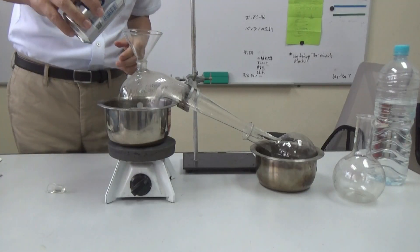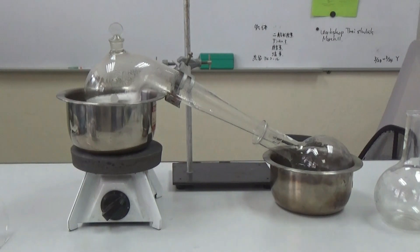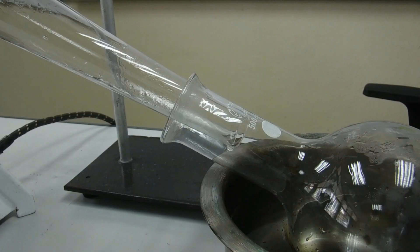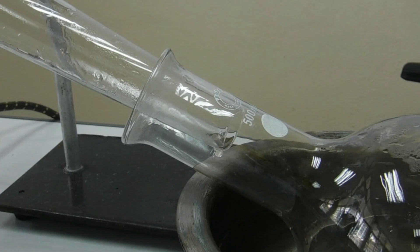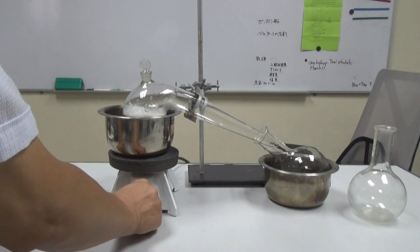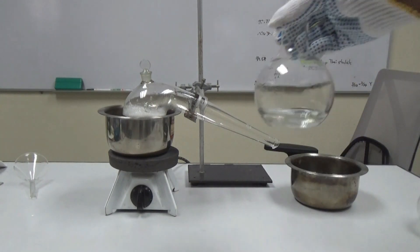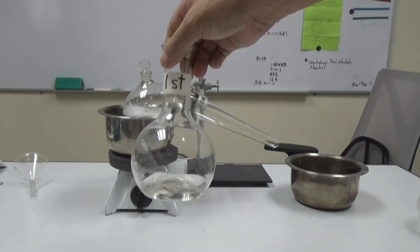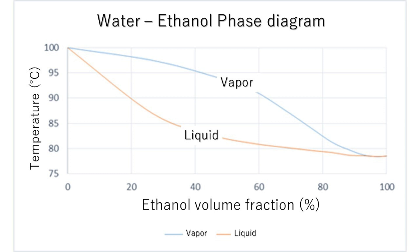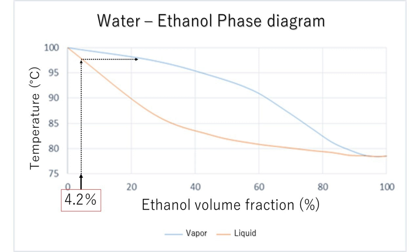Let's take a look at the boiling point. The vapor and the solution of a mixture of ethanol and water changes depending on the ethanol concentration. The beer of 4.2% ethanol is distilled into approximately 20% ethanol solution.